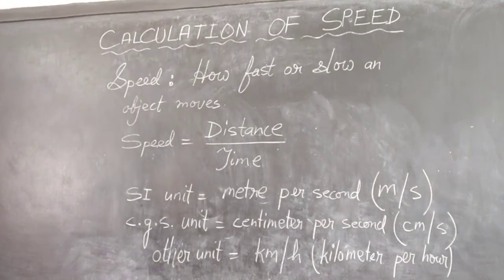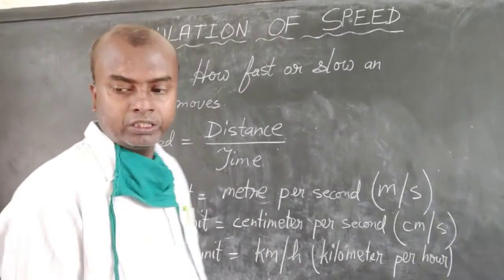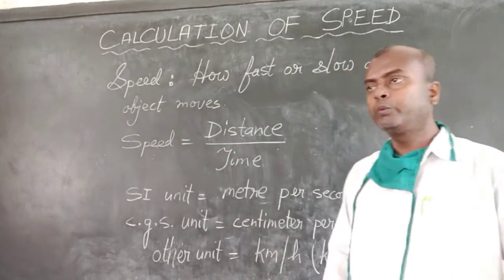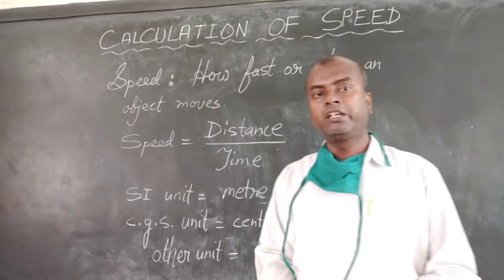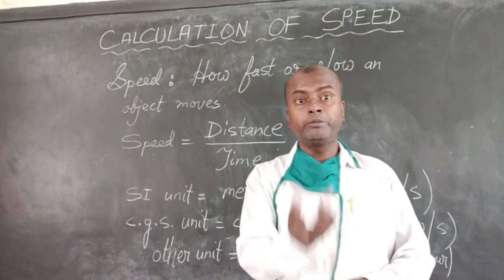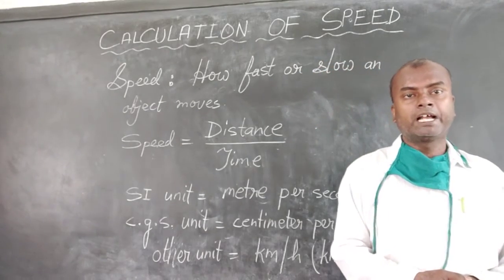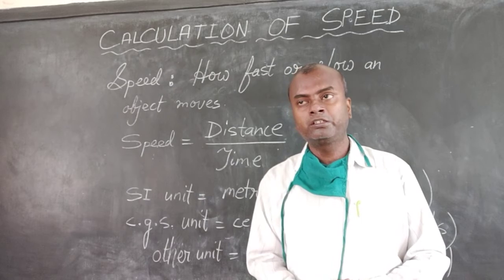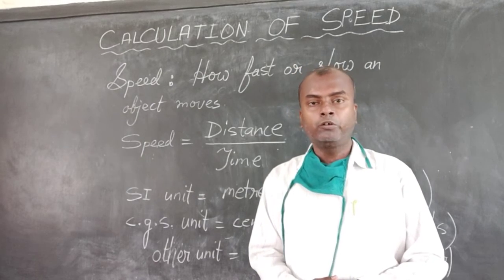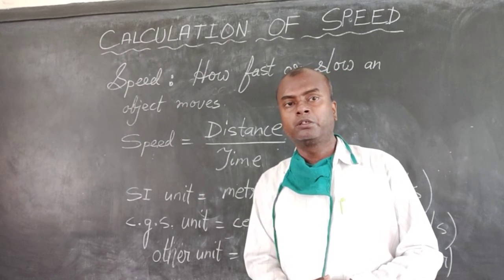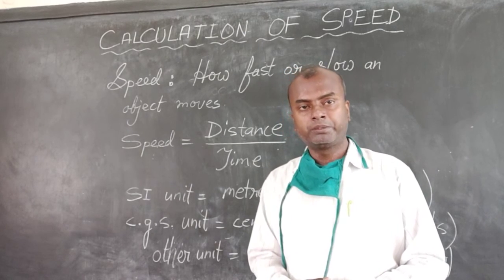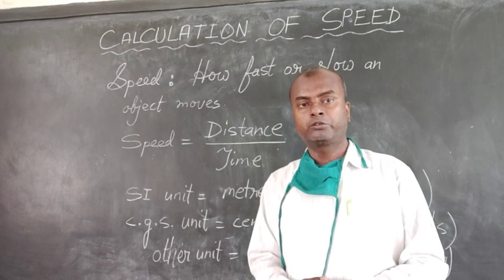So these are the things that are related with speed. We have actually finished this chapter. In the next class we will start solving the numerical problems related with density, speed, and previous to that we have studied volume and area. So we will try solving the question answers and numerical problems of these particular topics: volume, area, and then today what we discussed—density and speed. Thank you for attending the class today.